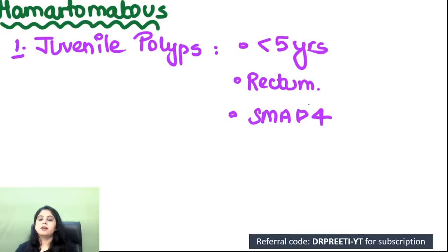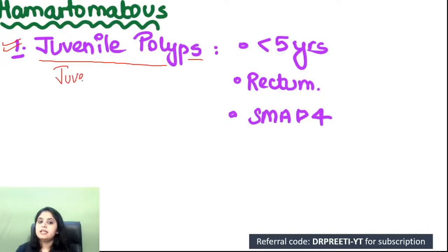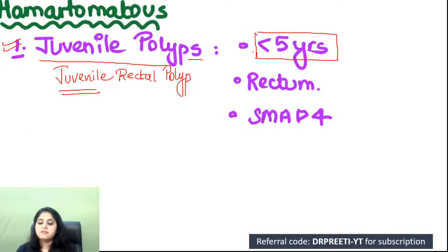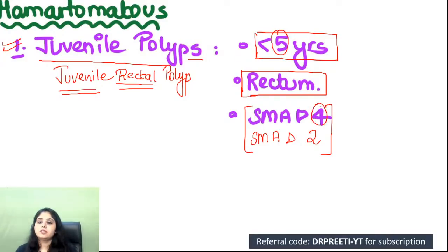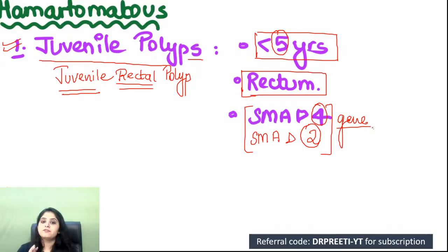Juvenile rectal polyp: age under five years. Gene mutations — think of 'less than five' → numbers four and two → SMAD2 and SMAD4 gene mutations. These are the key genetic mutations in juvenile polyposis syndrome.